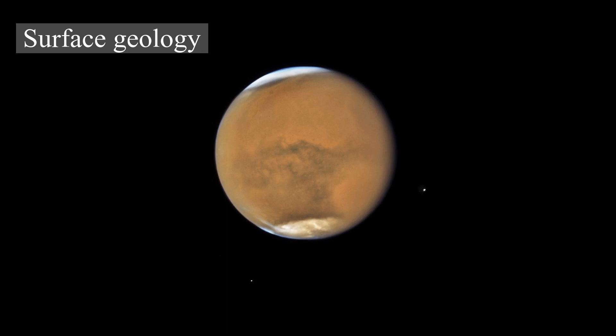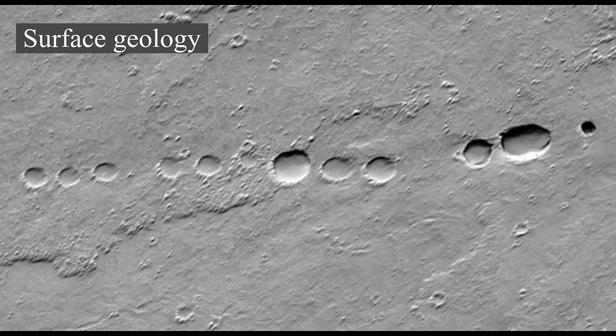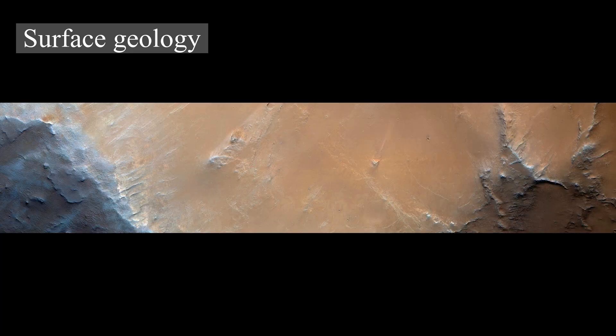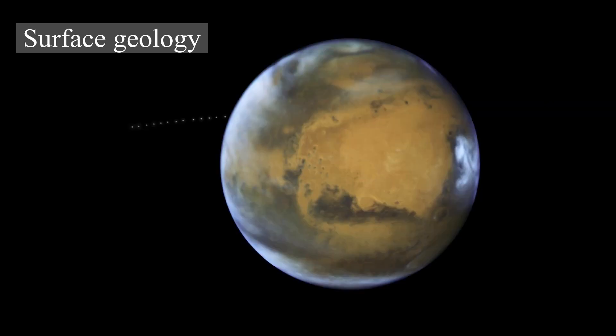Although Mars has no evidence of a structured global magnetic field, observations show that parts of the planet's crust have been magnetized, suggesting that alternating polarity reversals of its dipole field have occurred in the past. This paleomagnetism is similar to the alternating bands found on Earth's ocean floors. One theory suggests these bands indicate plate tectonic activity on Mars four billion years ago, before the planetary dynamo ceased to function and the planet's magnetic field faded.